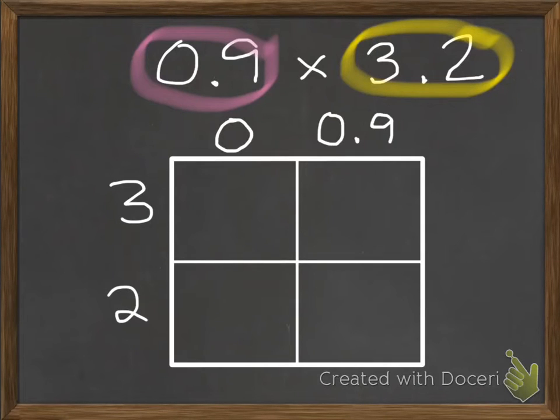Again, don't just write 2. Make sure you have 0.2 written as a decimal so that way you can remember what place value you're working with.